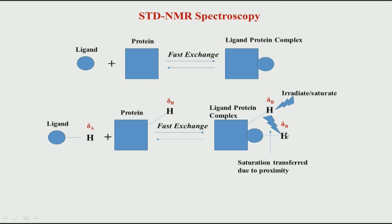If we do not get zero in the difference spectrum, it means there is binding — that is the first information. The second information is which atoms of the ligand are actually binding. From the difference spectrum, we can say that certain atoms in the ligand are binding and some are binding more than others, while some are far from the binding site. So STD NMR gives us binding site information: which atoms on the ligand are close to the binding interface based on how their intensity is affected by saturation transfer.